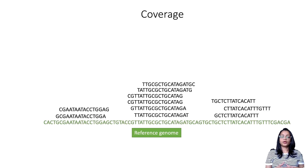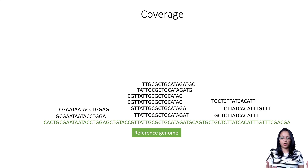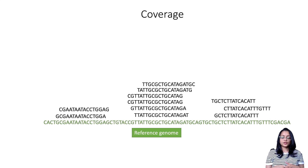Before we talk about sequencing depth, let's first discuss coverage. Coverage is a measure of redundancy — it's the average number of reads that align or cover a known reference at a particular location. Because sequencing is error-prone, higher coverage increases confidence in the base call. If each nucleotide is sequenced multiple times, the base call shared by the majority of reads reflects the correct nucleotide. More reads add more confidence and improve the chances of covering rare events, so deeper sequencing produces more robust results.